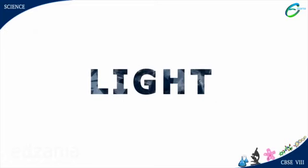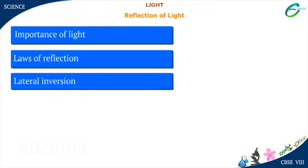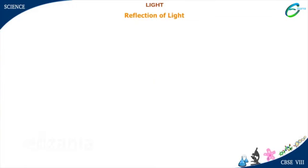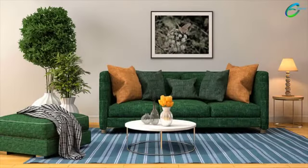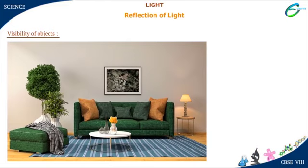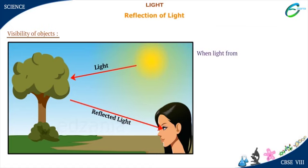Light affects the visibility of objects. Did you see anything? No, right? Let's switch on the light — now we can see everything. What happened exactly? Eyes alone cannot see any object; it is the light which helps us to see various objects around us. We cannot see a tree until and unless the reflected sunlight from the tree reaches our eyes. So, when light from an object enters our eyes, then that object is visible to us.